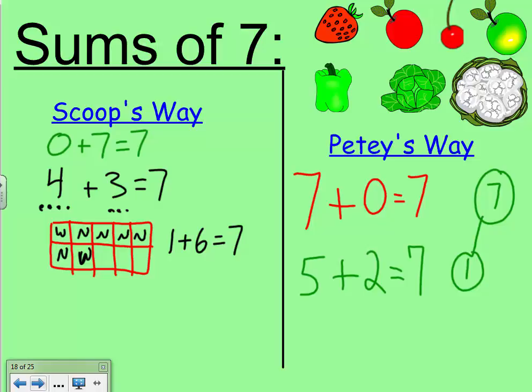So, 1 part has speckles, while 6 parts do not. 1 plus 6 equals 7.